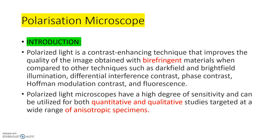Birefringence is an optical property of a material having a refractive index that depends on the polarization and propagation direction of light. Optically anisotropic materials are said to be birefringent. So birefringence is the optical property of materials where the refractive index depends upon the polarization and propagation direction of light.